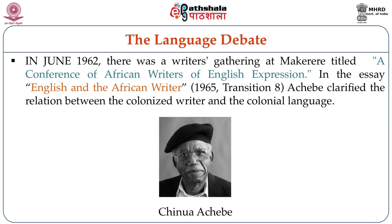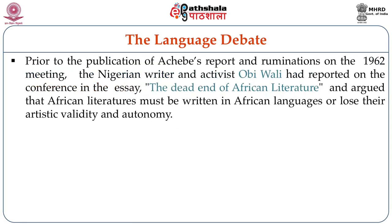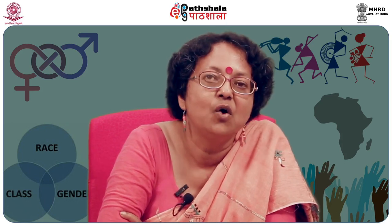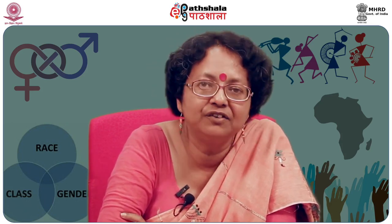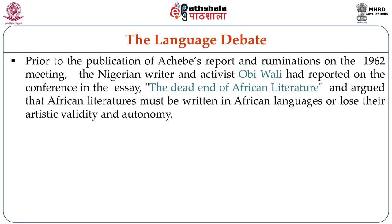In the essay 'English and the African Writer,' written by Chinua Achebe in 1965 in the journal Transition, Achebe clarified the relation between the colonized writer and the colonial language. Prior to the publication of Achebe's report and ruminations on the 1962 meeting, the Nigerian writer and language activist Obi Wali had written an essay on the same conference. The essay was called 'The Dead End of African Literature.'